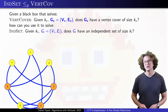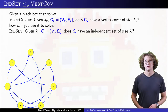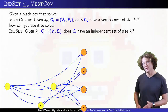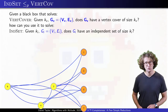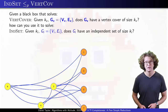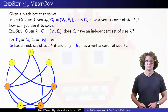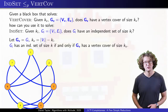We can reduce independent set to vertex cover. In a graph, no edges go between two vertices of an independent set. That means every edge either goes from the independent set to something not in the set, or between two things not in the set. Either way, every edge has at least one vertex not in the independent set. The vertices not in the independent set form a vertex cover. So there is a size 4 independent set in the graph with seven vertices if and only if there is a vertex cover of size 3.